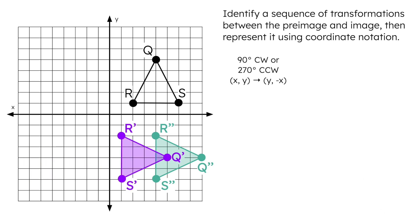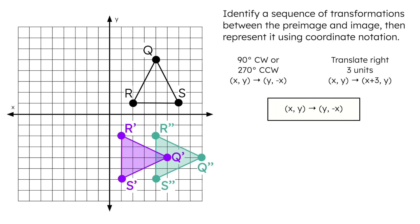This will be the image after the rotation. Now that we can see this in-between step, what else do we need to do to get the final image? What is the second transformation we can take? We need a translation three units right, creating Q''R''S''. The translation three units right is represented by (x + 3, y). Now let's write the single coordinate notation that describes this sequence. The rotation switched x and y and changed the sign of x. The translation increased the new x-coordinate by 3 and did not affect the new y-coordinate. The coordinate notation describing this entire sequence is (y + 3, −x).